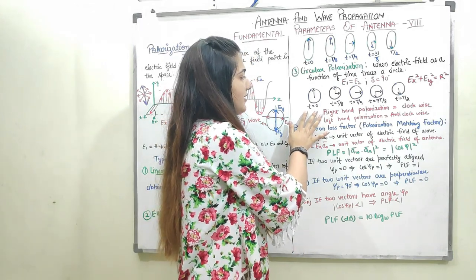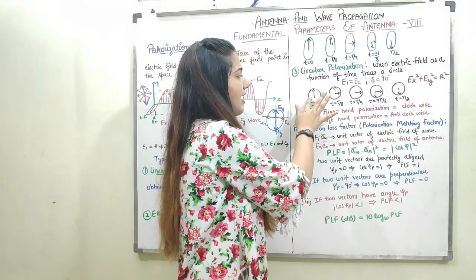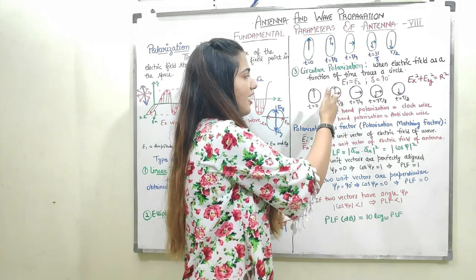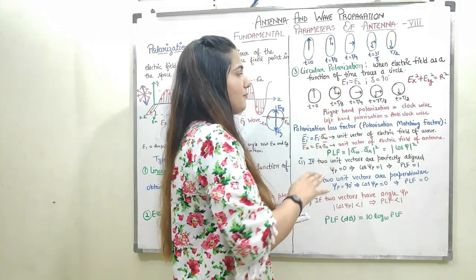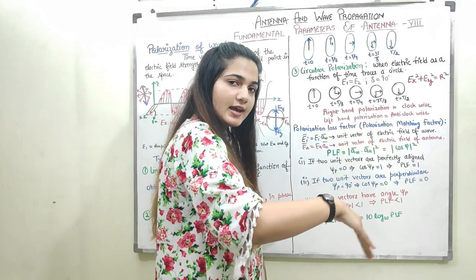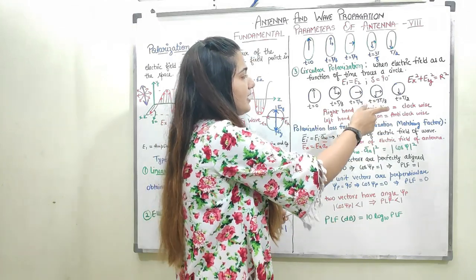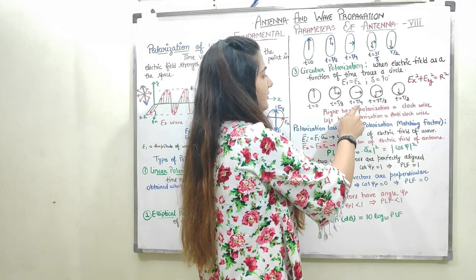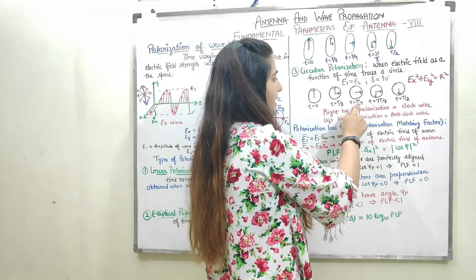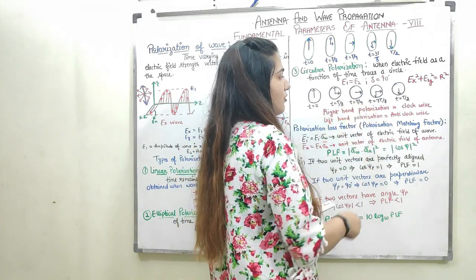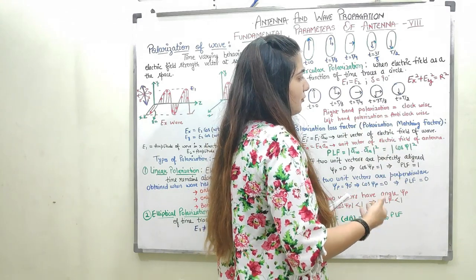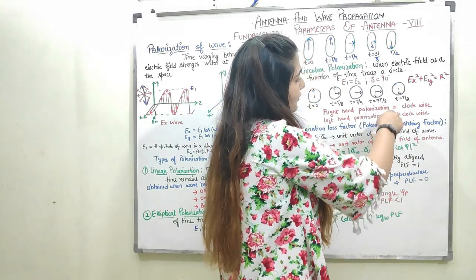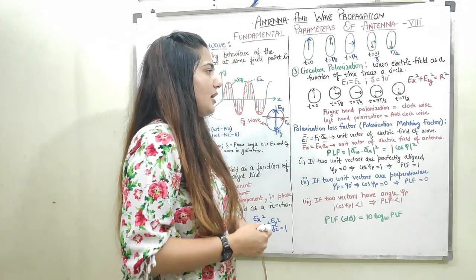At time t = 0, we have only the E1 component. At t = T/8, we have both components — the wave is moving clockwise. At t = T/4, we have only the horizontal component. At t = T/2, we get only the vertical component. I hope you now know the different types of polarization.